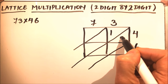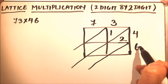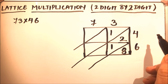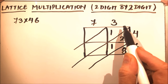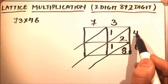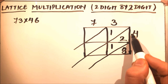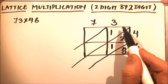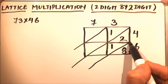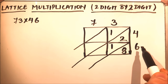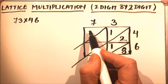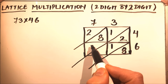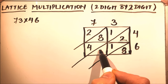Six times three is eighteen, so we'll write one and eight. The number on top pairs with the number on the side — the two digits go into their respective box sections. Four times seven is twenty-eight, so we write two and eight. Six times seven is forty-two, so we write four and two.